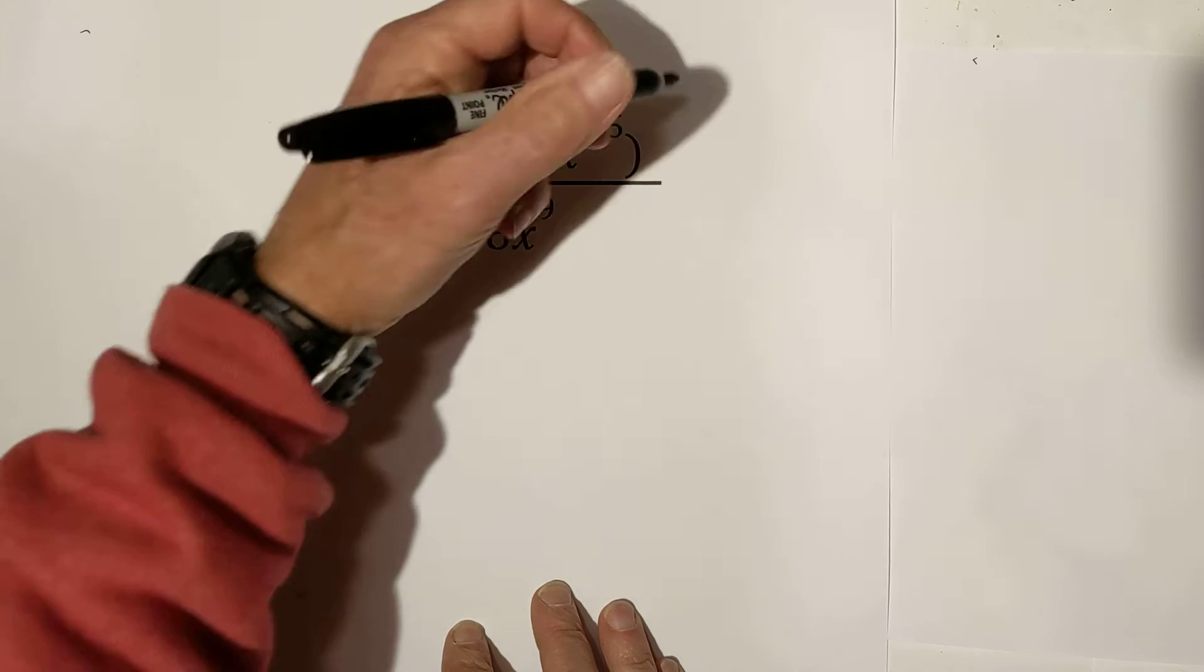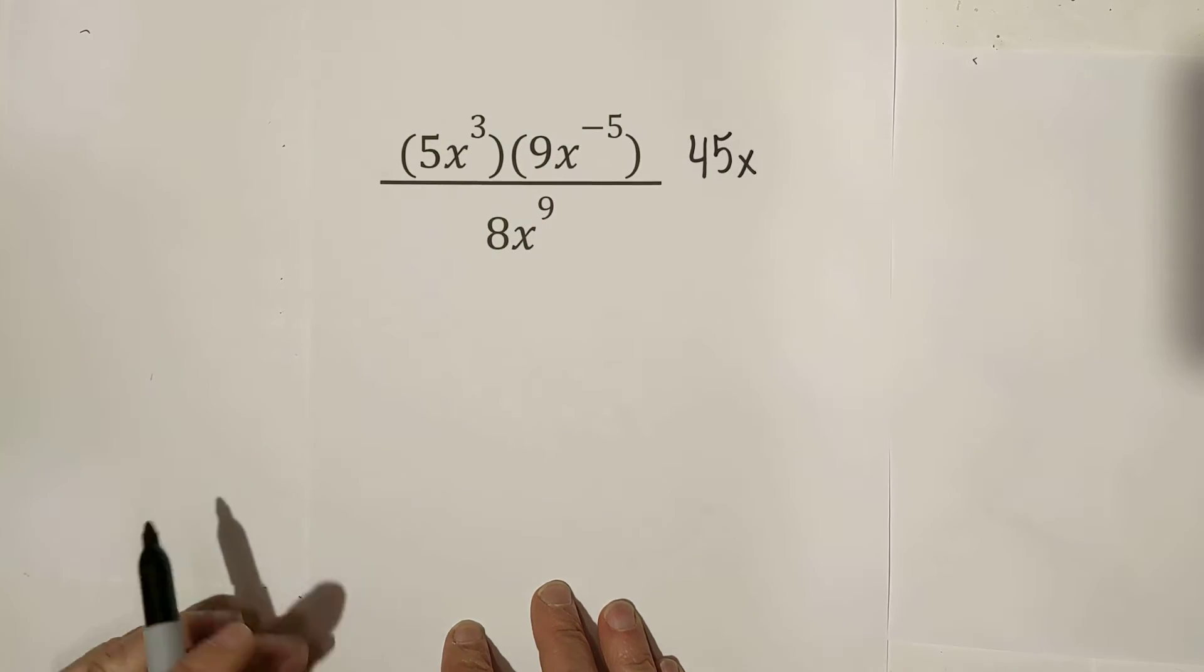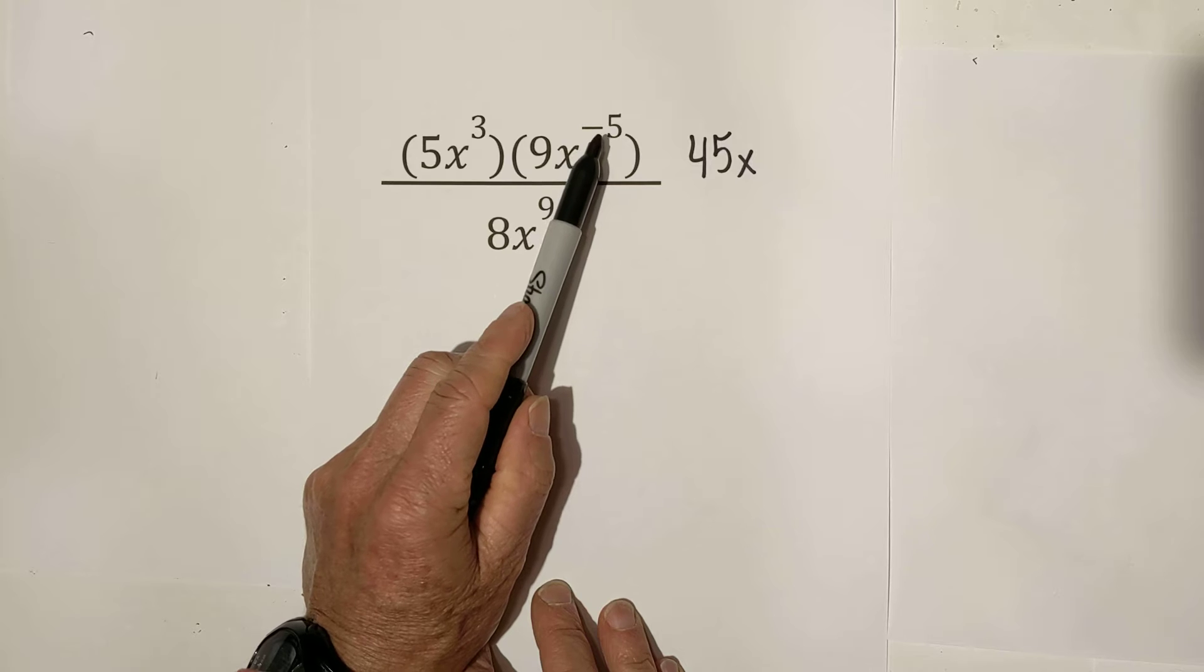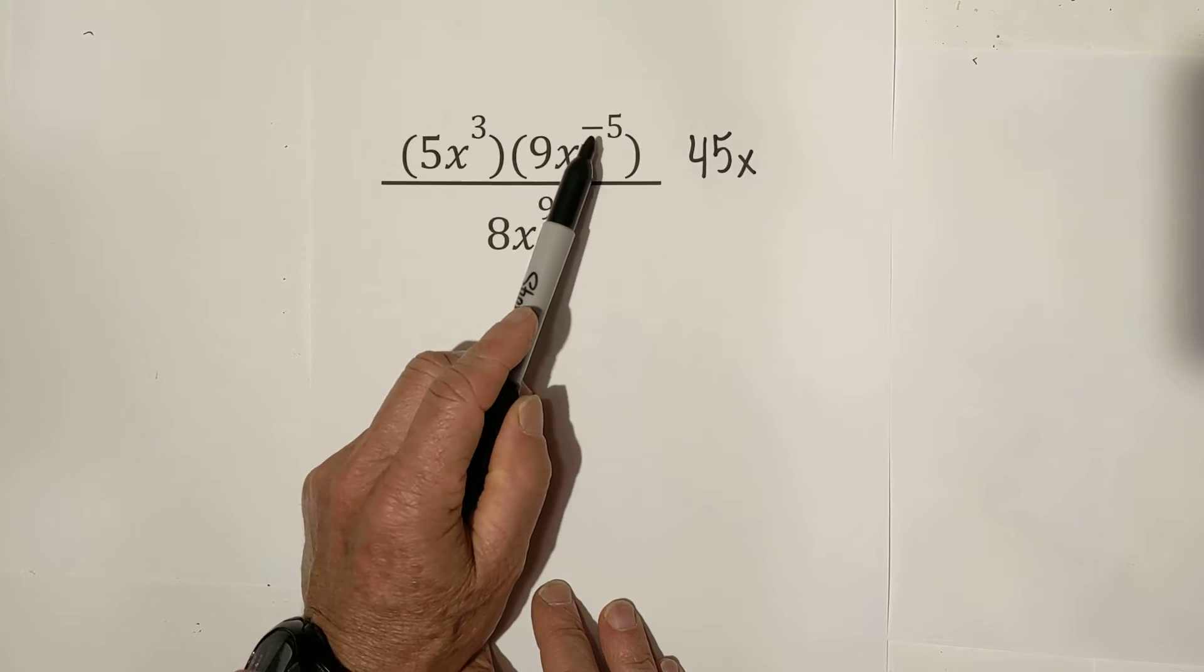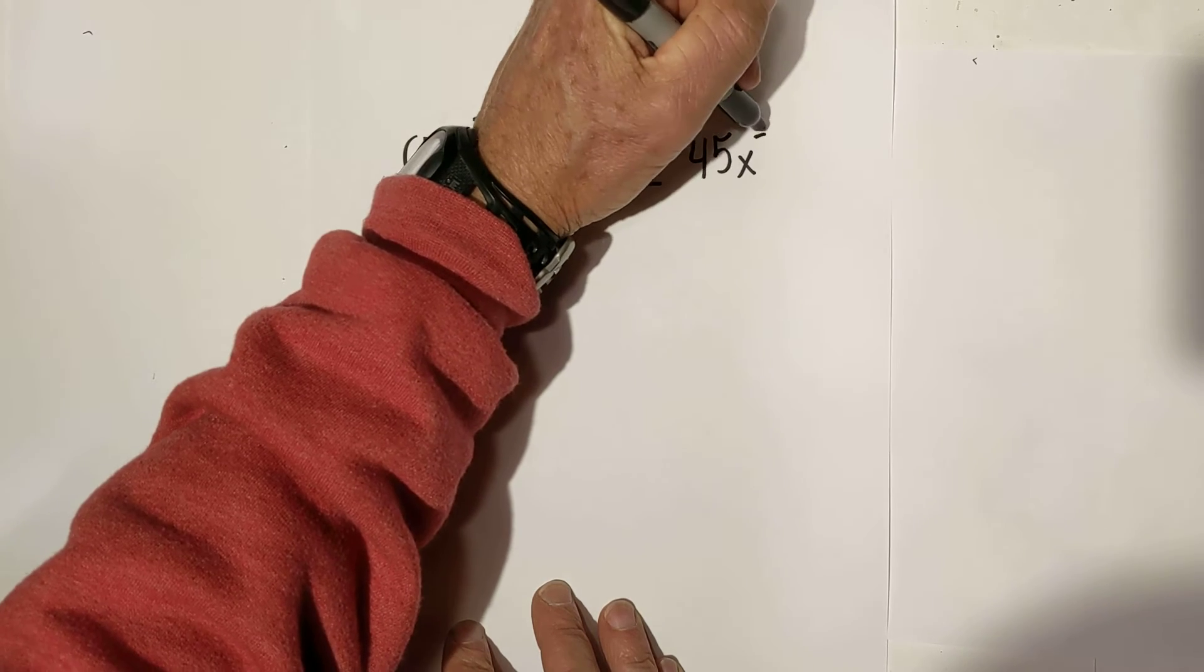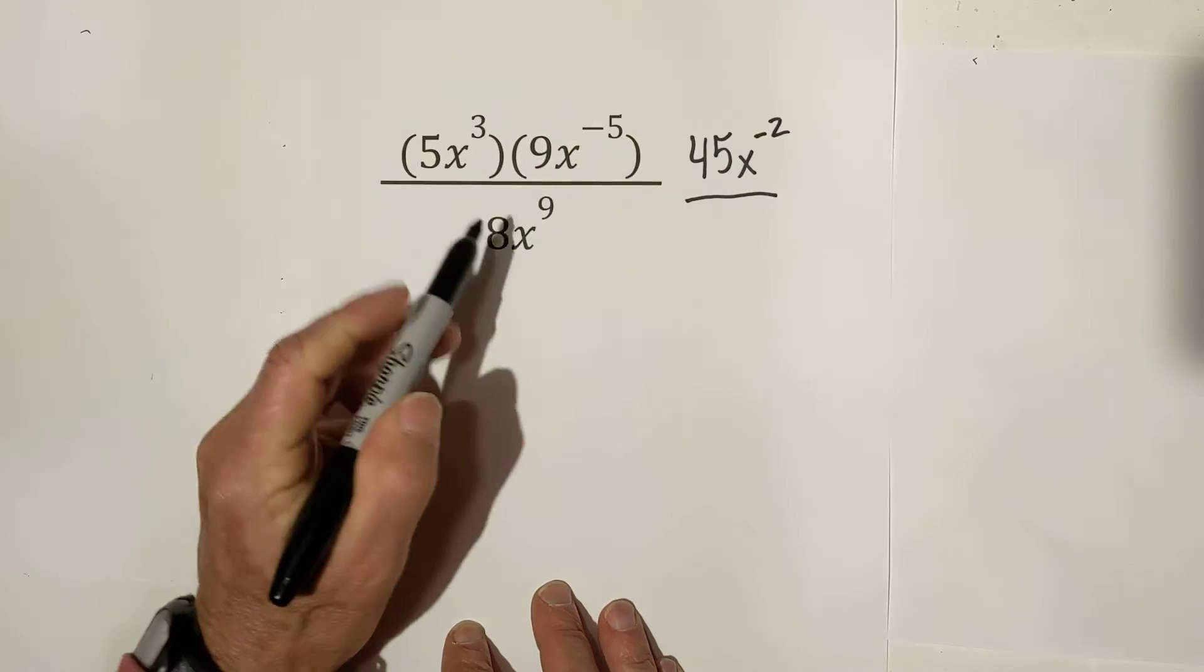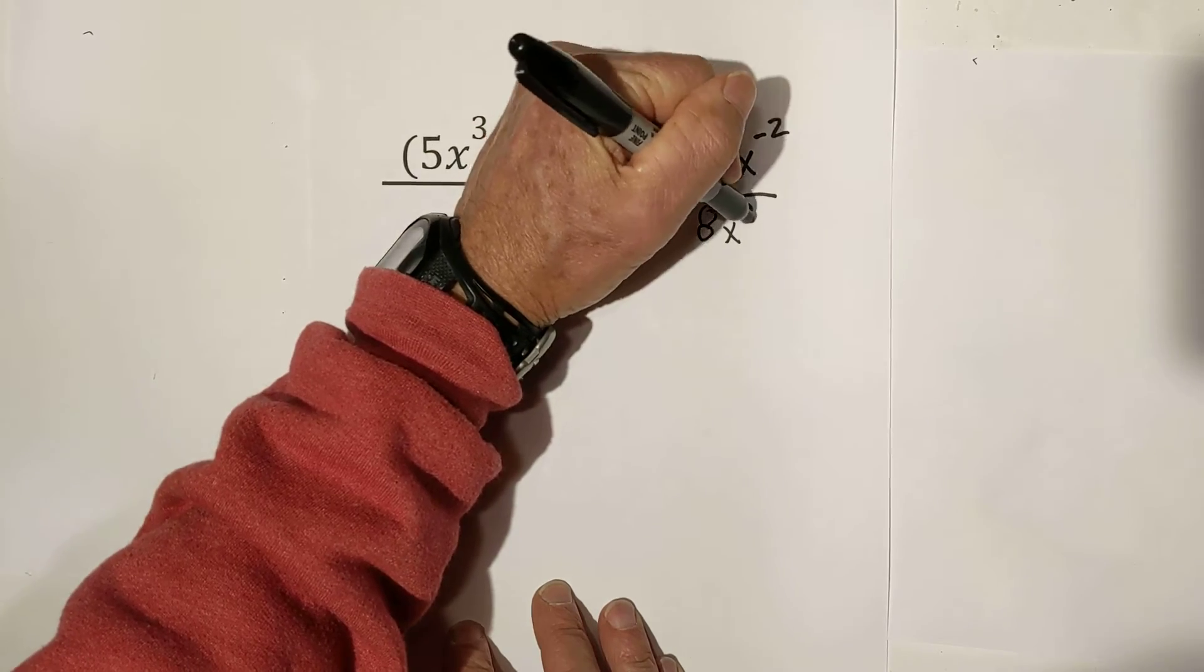Let's first, 5x times 9x is 45x. The rule with exponents is, when you multiply, you add or subtract. We have a negative and a positive, so we're going to take the sign of the larger, and 5 minus 3 is negative 2. And that's going to be over 8x to the 9th.